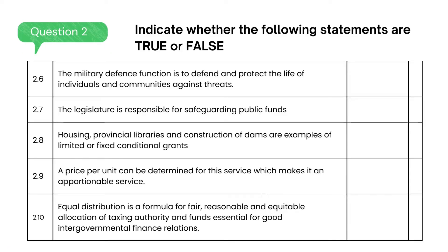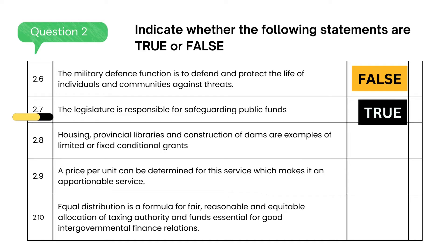Indicate whether the following statements are true or false. The military defence function is to defend and protect the lives of individuals and communities against threats — the answer is false. The legislature is responsible for safeguarding public funds — the answer is true. Housing, provincial libraries, and the construction of dams are examples of limited or fixed conditional grants — the answer is false.